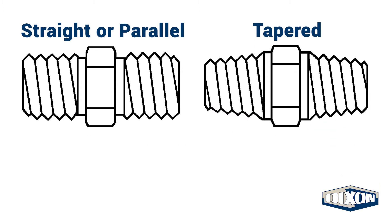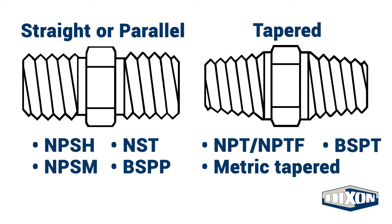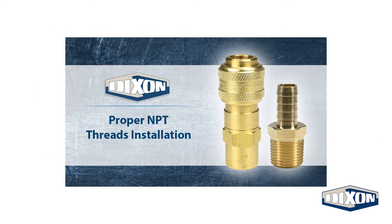Parallel threads include NPSH, NPSM, NST, and BSPP. They require the use of a gasket to make the seal. Tapered threads include NPT, NPTF, BSPT, and metric tapered. These threads require PTFE tape or pipe dope to create a seal on the thread taper.